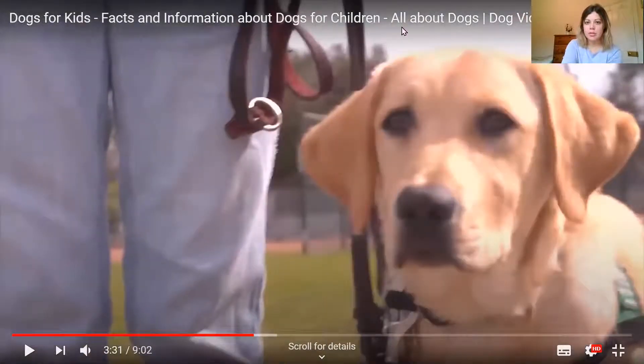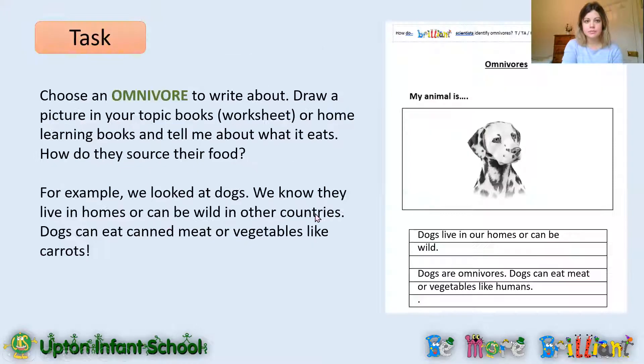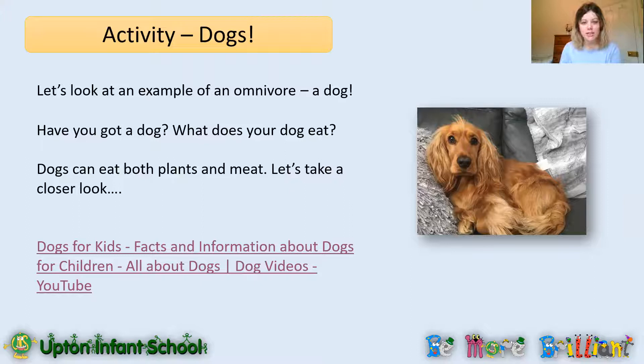Okay, we're going to stop the video there because it's quite a long video. I just wanted you to listen to that part about what dogs eat and how they are omnivorous. Dogs are omnivores. Did you see what some of those dogs were eating? In that video we saw dogs eating lots of different things — we saw a dog eating an ice cream, some puppies drinking milk, a dog eating some corn, and a dog on the farm that I'm sure gets fed lots of meat. So they can eat either.